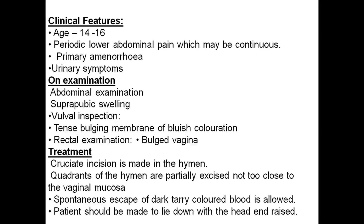The clinical features are first seen among those aged 14 to 16 years. Symptoms include periodic lower abdominal pain, which may be continuous, primary amenorrhea, and urinary symptoms. On examination, abdominal examination shows a cystic swelling. Vulval inspection shows a tense bulging membrane of bluish coloration. Rectal examination reveals a bulging vagina.